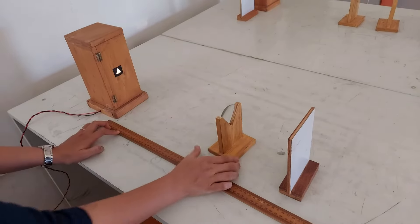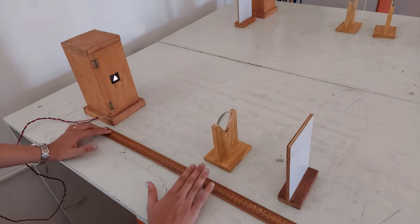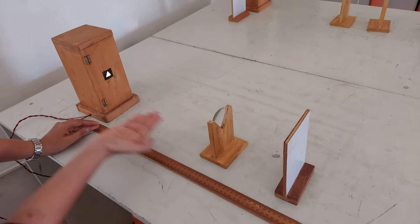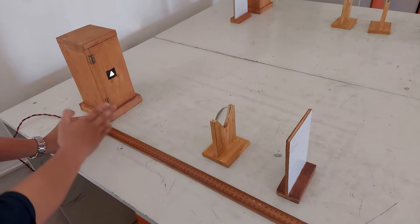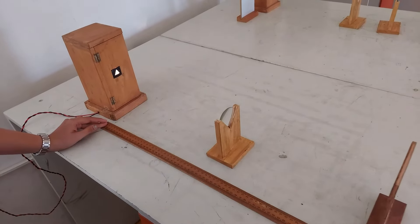This distance is the object distance, u. When substituting in the formula, you should take it as negative because light travels in that direction. If you measure from the lens, it will be negative. So, u will be negative. Fix the lens and focus on the screen to get a proper image.